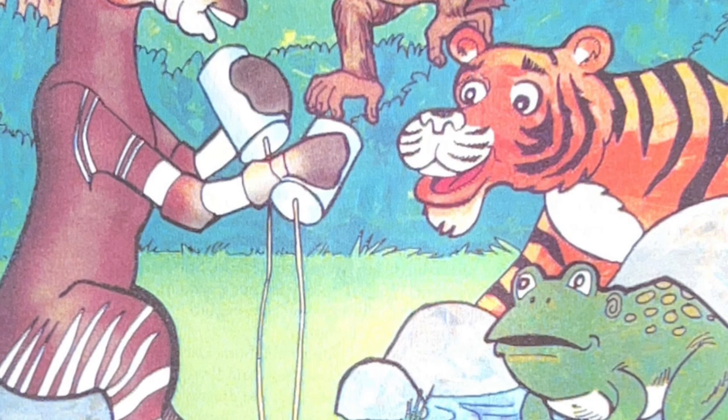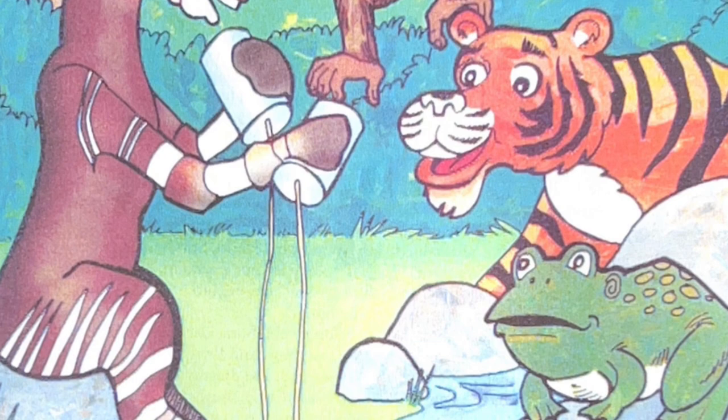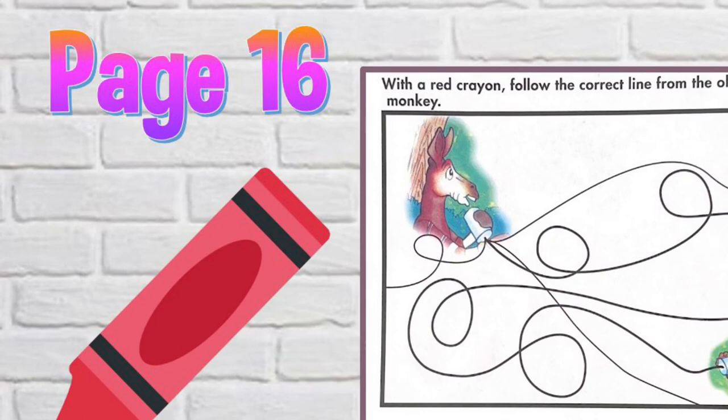So, kids, if we want friends, we need to show ourselves friendly. Now, on your page of Animal Science on page 16, with a red crayon, follow the correct line from the Okapi to the monkey.